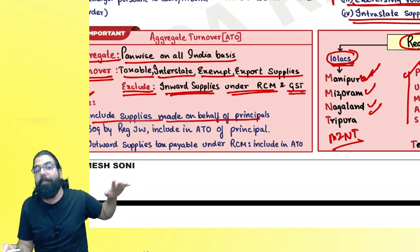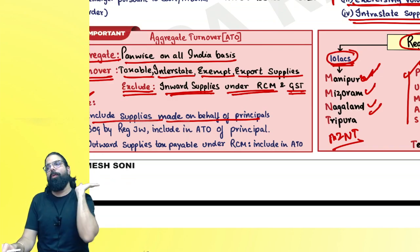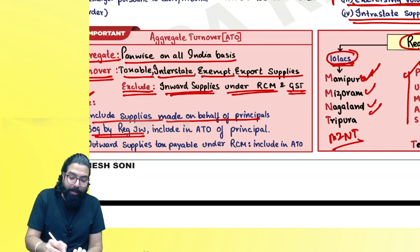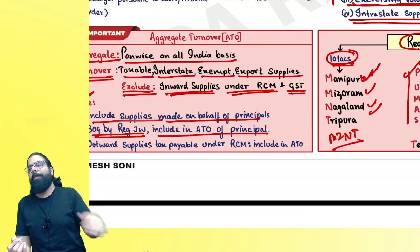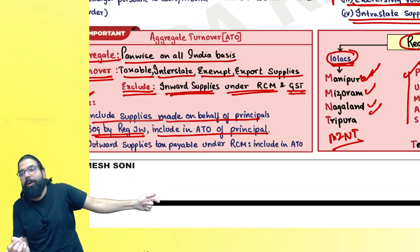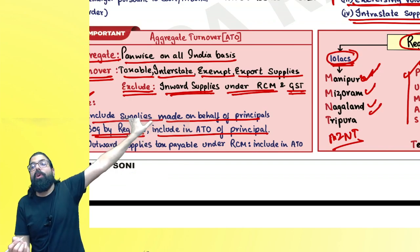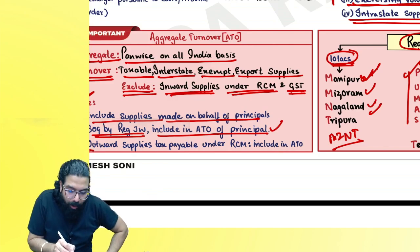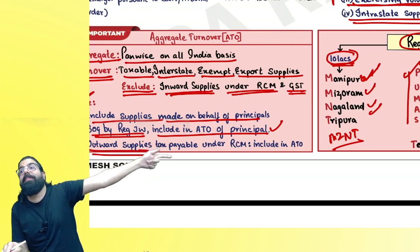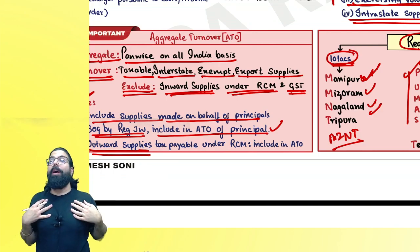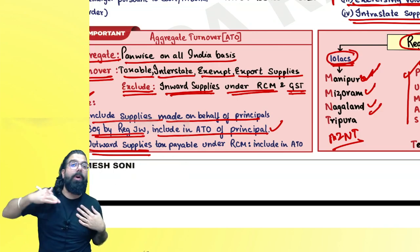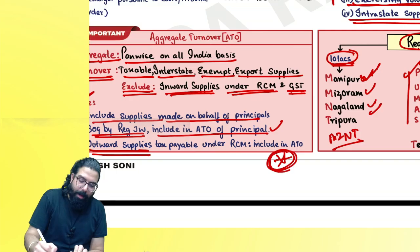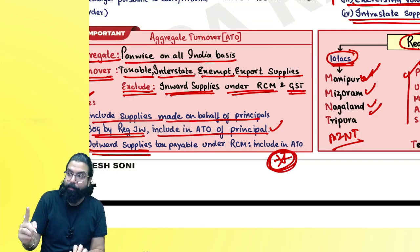As an agent supplying on behalf of principal under section 7(1)(c), if you have given the invoice, it will be included in your turnover. Supply of goods from registered job worker premises is always included in the aggregate turnover of the principal, because it is the principal who sold from the job worker's premises. Outward supply is your turnover; inward supply is your purchase and will never come in your turnover.